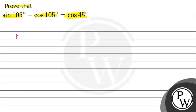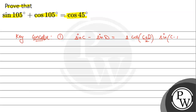Key concept kya use kareenge? The first result we will use is sin C minus sin D, which is equal to 2 into cos (C plus D) upon 2, into sin (C minus D) upon 2.